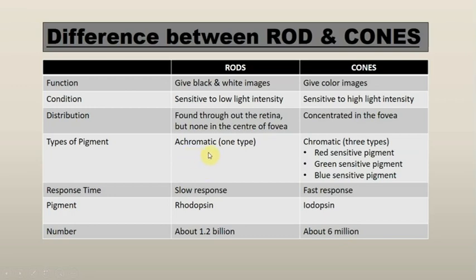Regarding pigments: rods are achromatic — only one type of pigment is present. Cones are chromatic — three types of pigments are present: blue-sensitive, green-sensitive, and red-sensitive. In terms of response time: rods are slow while cones are fast. The pigment present in rods is rhodopsin, while in cones it is iodopsin. Numerically, 1.2 billion rods and 6 million cones are present in one eye. Importantly, the body synthesizes rhodopsin from vitamin A, so vitamin A deficiency means rhodopsin cannot be produced, which causes night blindness.